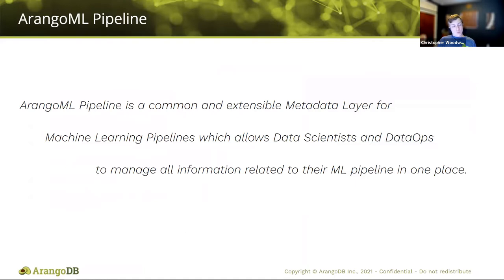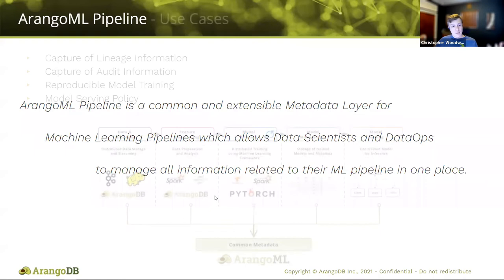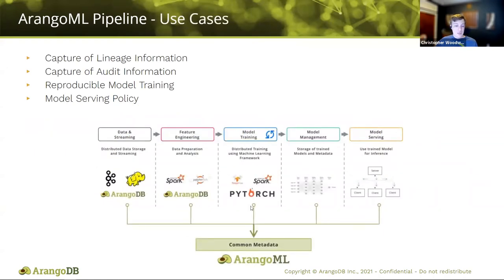Moving on to the Arango ML pipeline — it is a common and extensible metadata layer for machine learning pipelines, which allows data scientists and DataOps to manage all information related to their ML pipeline in one place. The whole idea is to offer this common metadata layer that supports each step of your machine learning process, with natural fits for storing the data and where you're getting your data from.